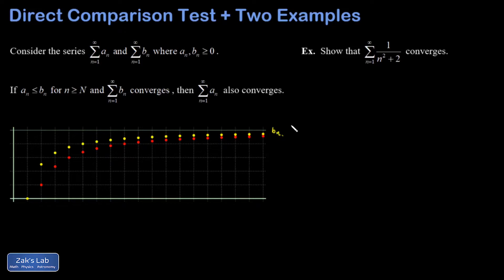Suppose BN converges — so the sequence of partial sums is actually approaching the limit, which in this particular picture is 5. And suppose that every term in the series AN is less than every term in the series BN. Then every partial sum for AN will lie below every partial sum for BN. That sequence of partial sums is increasing and bounded above, so it's guaranteed to converge.